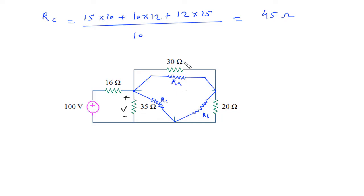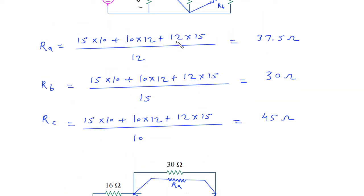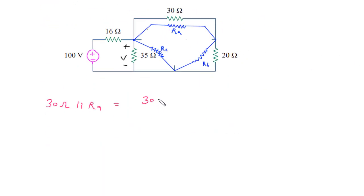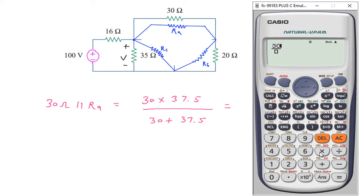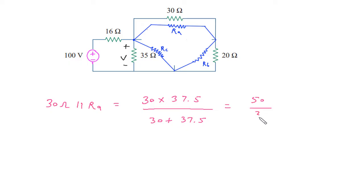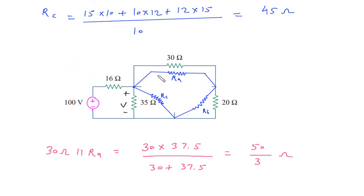Now Ra is in parallel with 30 Ohm. So 30 parallel with Ra (37.5 Ohm): 30×37.5 divided by (30+37.5) equals 50/3 Ohm. So the value of this combination is 50/3 Ohm.